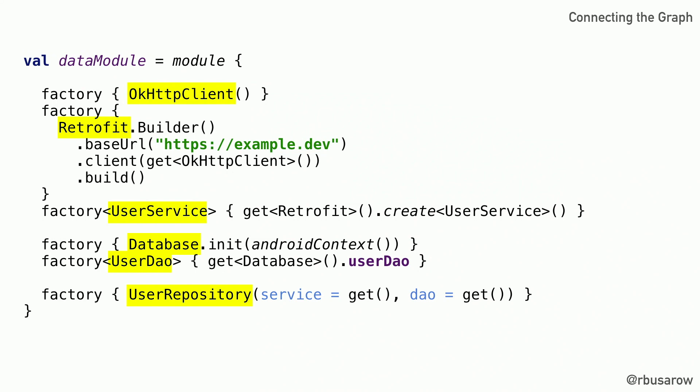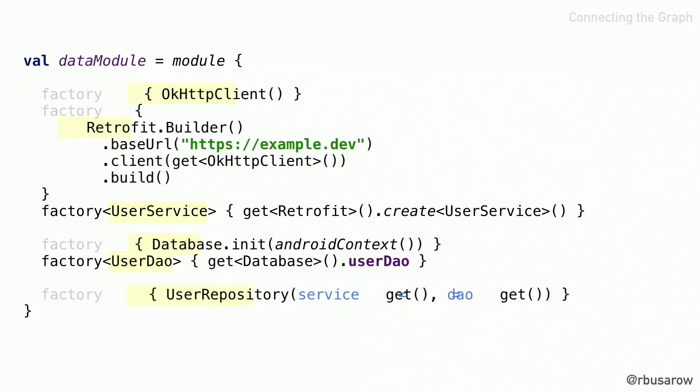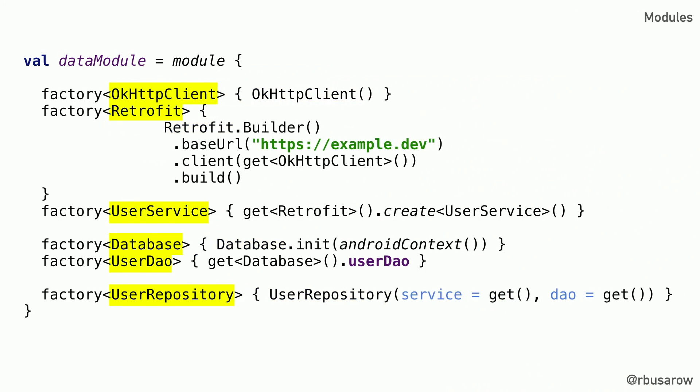I want to make a point: this module can be pretty difficult to read. We've got places where we're deferring and explicitly declaring types as part of the function call, and others where we're inferring it. Anytime I write a module like this, I make sure to align everything so it's legible in the same spot and you don't have to go digging through code.